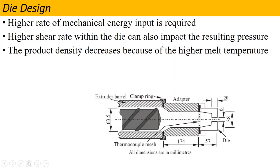Higher shear rate within the die can also impact the resulting pressure. When we reduce the opening of the die, pressure will build up, and we will see a high shear rate. The final result of the pressure will also affect the product density — the density of the product will change.